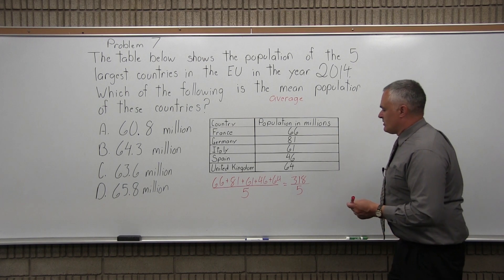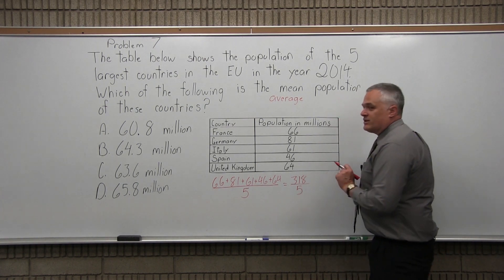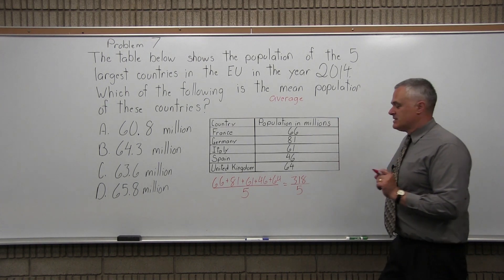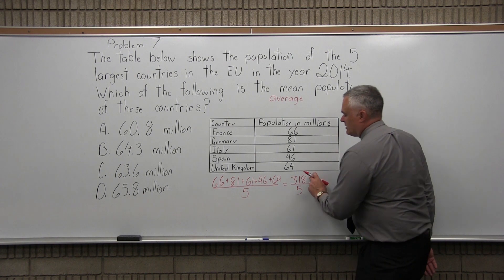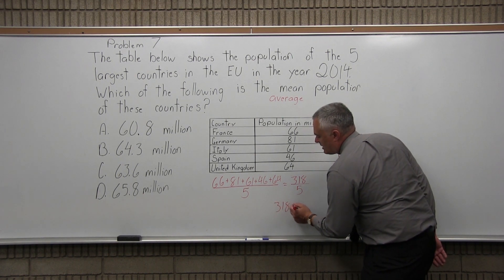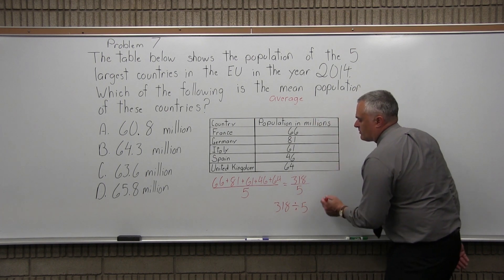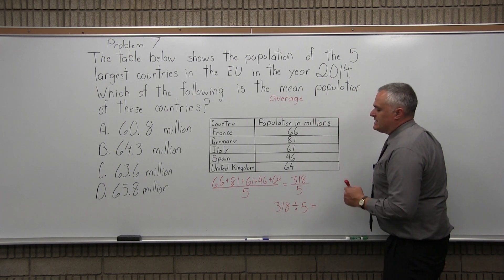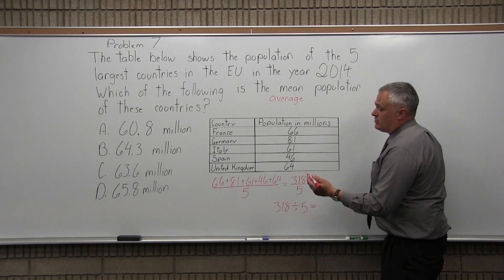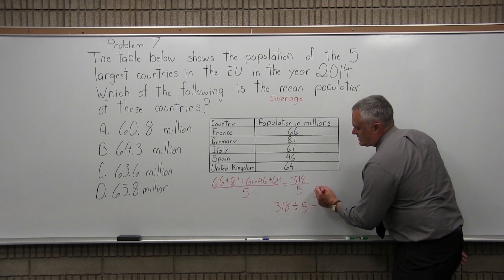If you are not going to do it the long way, most people would use a calculator, but you have to divide in the correct order — it makes a difference. You want to enter the numerator of your fraction first: 318. Press divide on your calculator, then put in the denominator of your fraction, and press equals. If you do that, you are going to get 63.6.